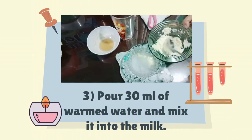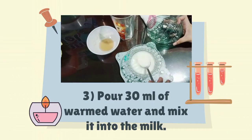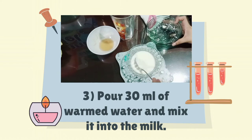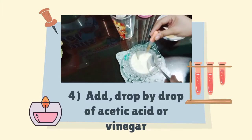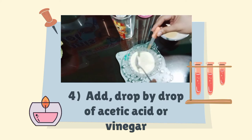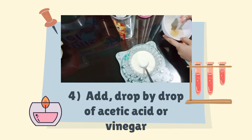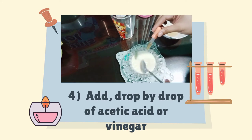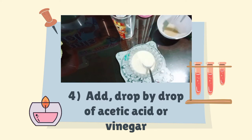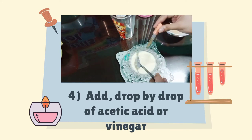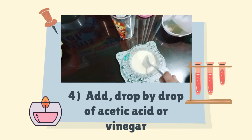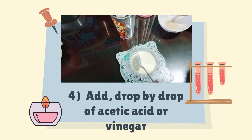Third, pour 30 ml or 2 tablespoons of warm water and mix it into the milk. Fourth, add drop by drop of acetic acid or vinegar while stirring the milk suspension. Observe the formation of the precipitate. The purpose of adding vinegar or acetic acid to the milk is to lower the pH of the milk and for the protein casein to reach its isoelectric pH. When this occurs, the casein will separate from the solution.